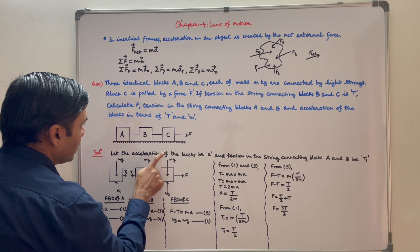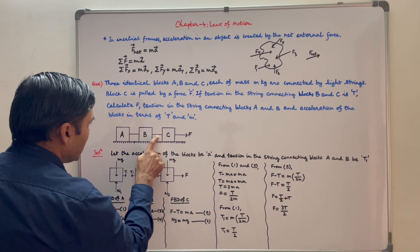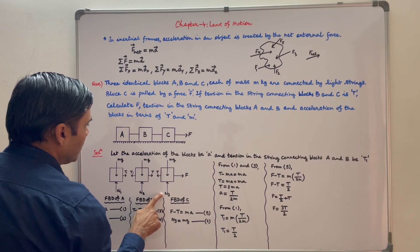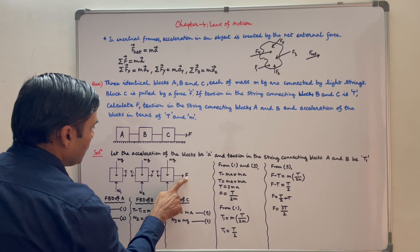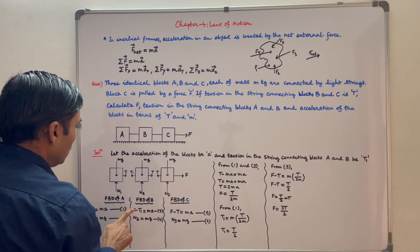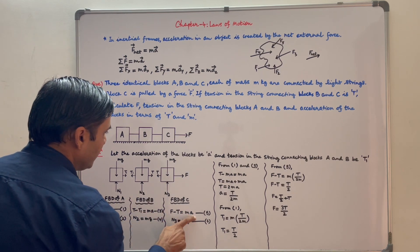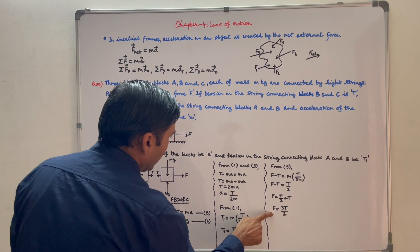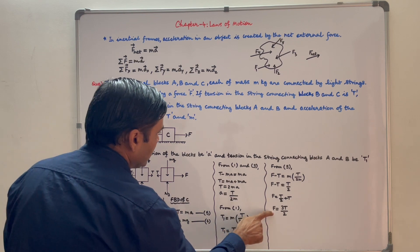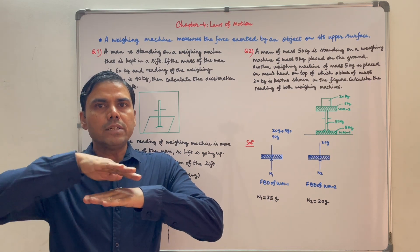This is FBD of block C. Force F is working towards right. Tension T is created by this string. Mg is its weight and N3 is normal reaction applied by the floor. So F minus T is equal to M into A, and N3 is equal to Mg. We have formed all these equations. Solving equations 1, 3, and 5 to get A, T1, and F: A comes out to be T by 2M, T1 is equal to T by 2M, and F is equal to 3T by 2.